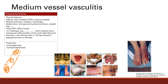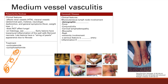Next is Kawasaki disease. Again, it's an Asian name, so you'll see it in Asian children — less than four years old. There's a variety of symptoms. First Aid has a nice mnemonic: crash and burn.